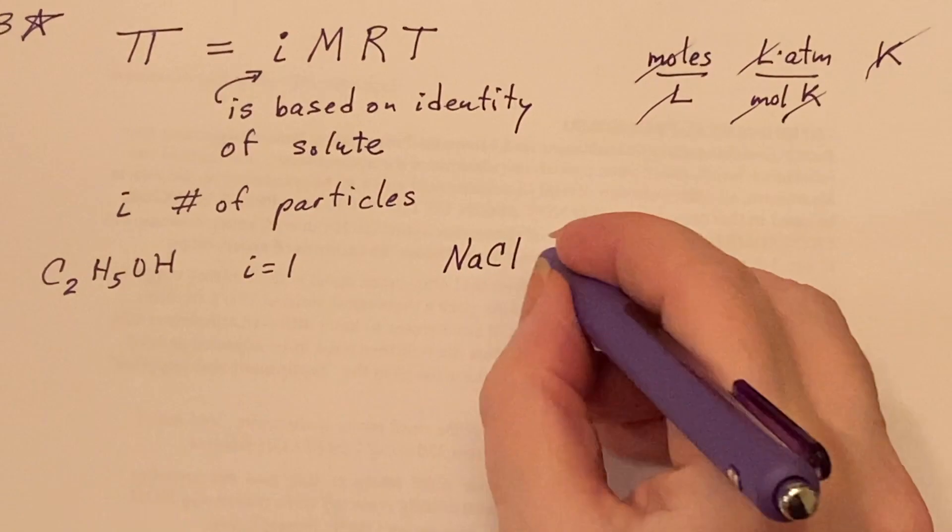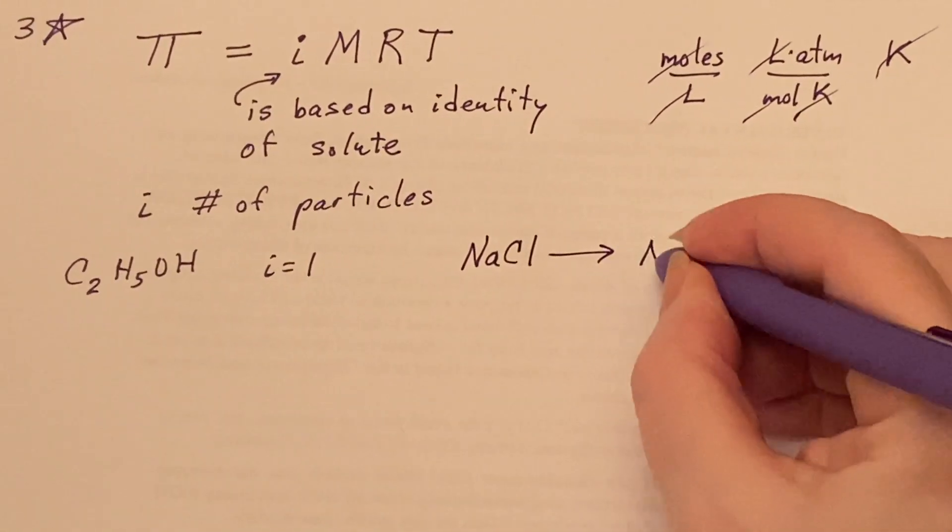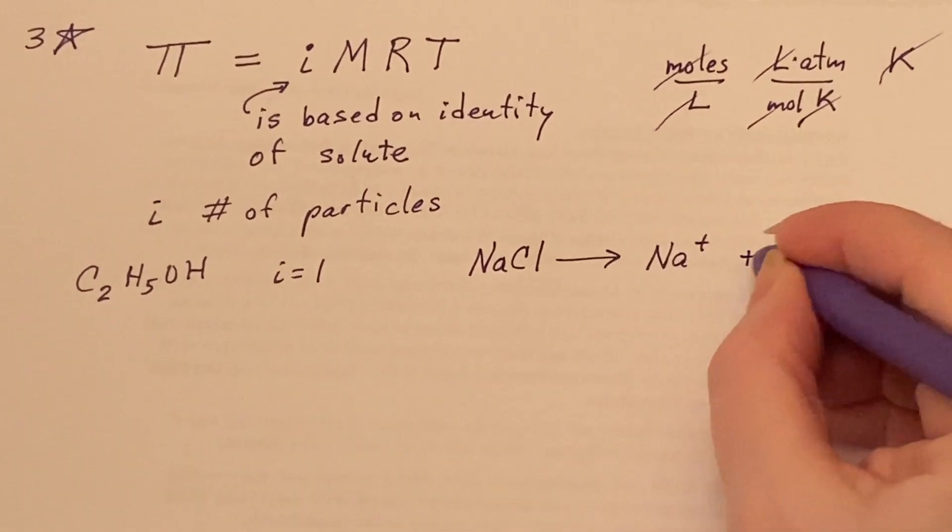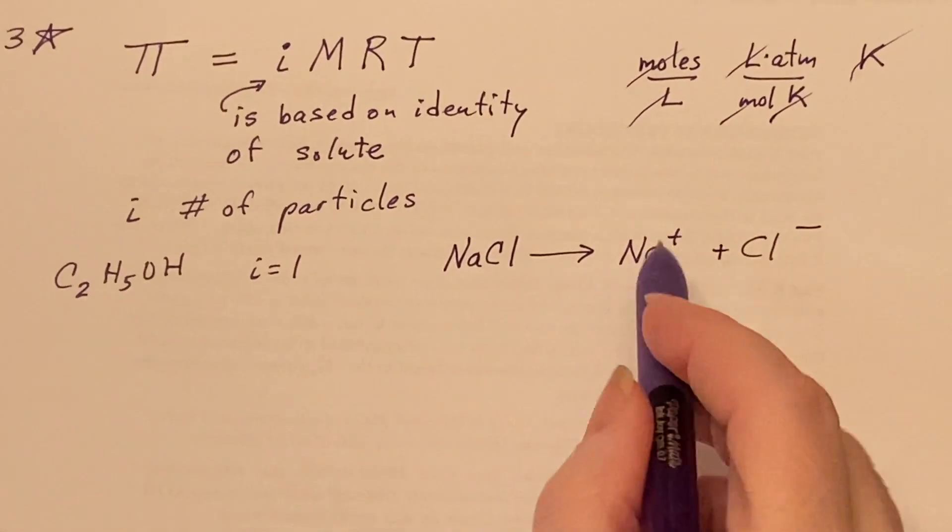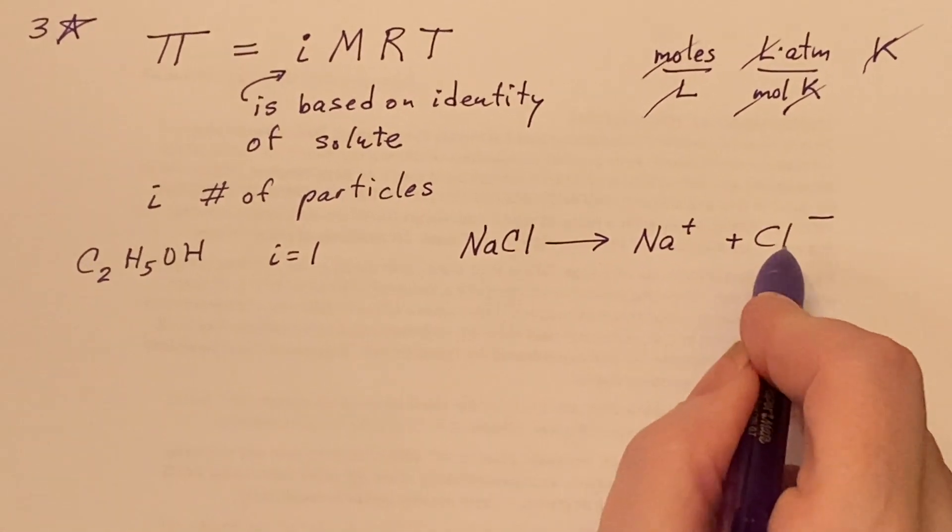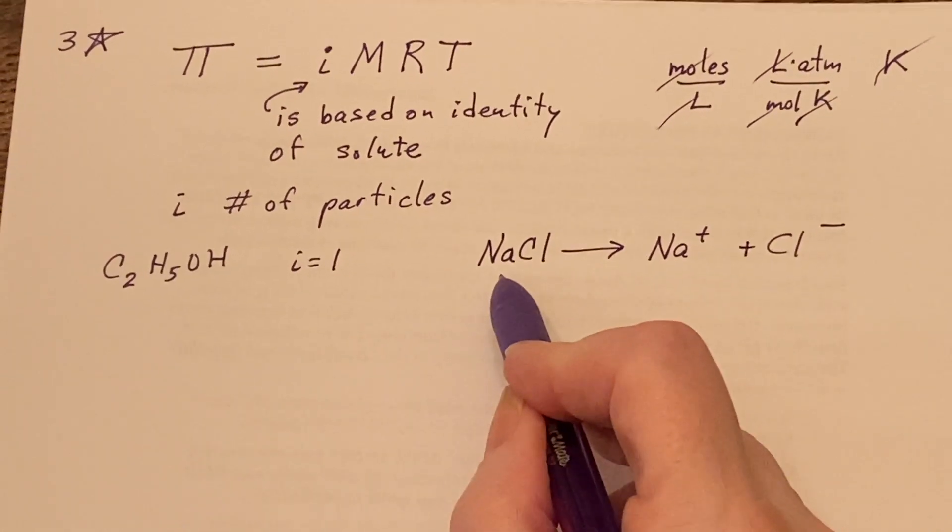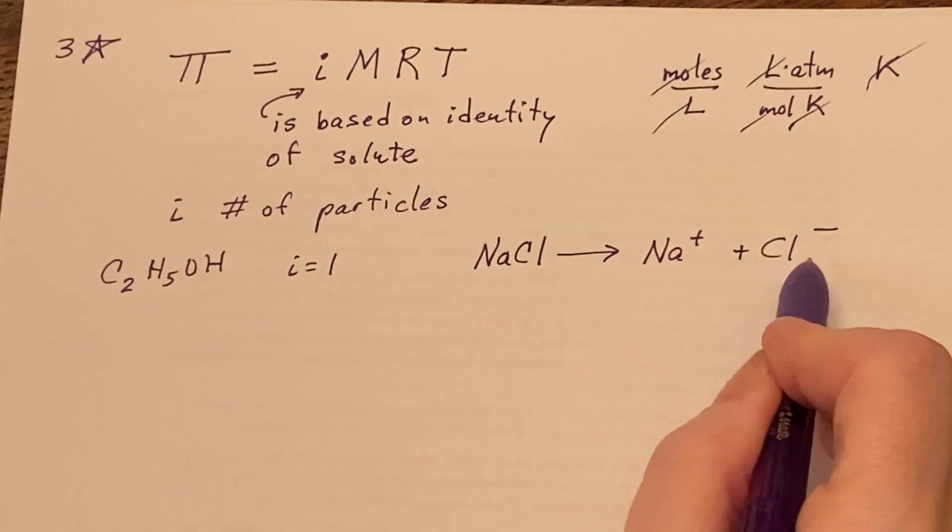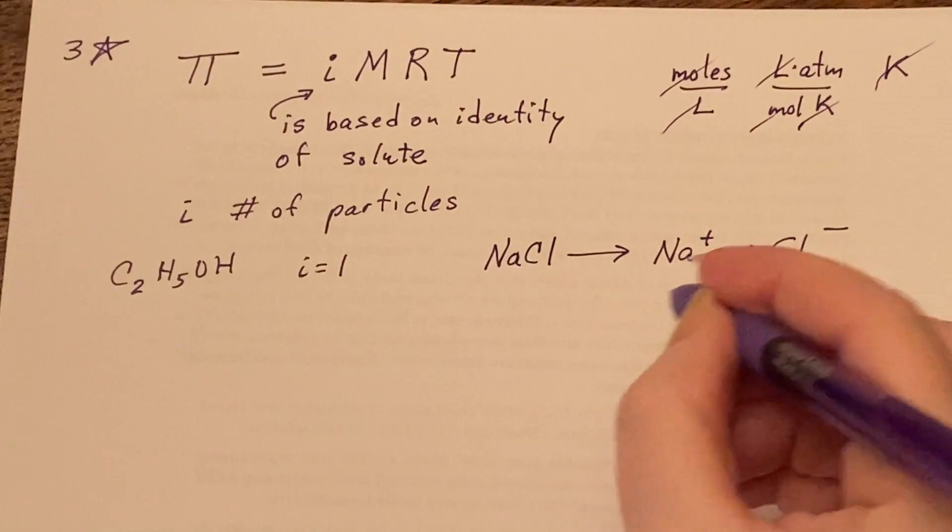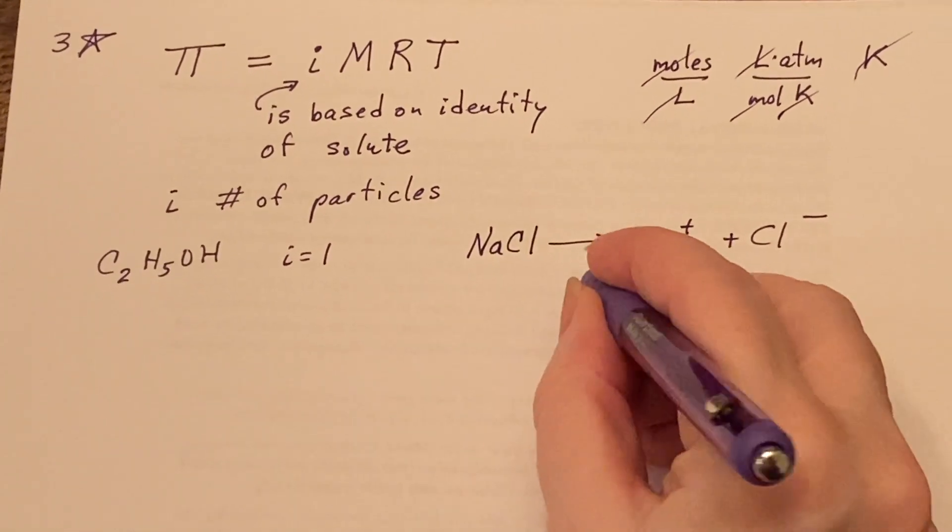If on the other hand I was dissolving sodium chloride, I think of sodium chloride as falling apart into ions. Now I have two different particles. I might have put a mole of sodium chloride in, but I end up with two moles of particles, so i would be equal to two.